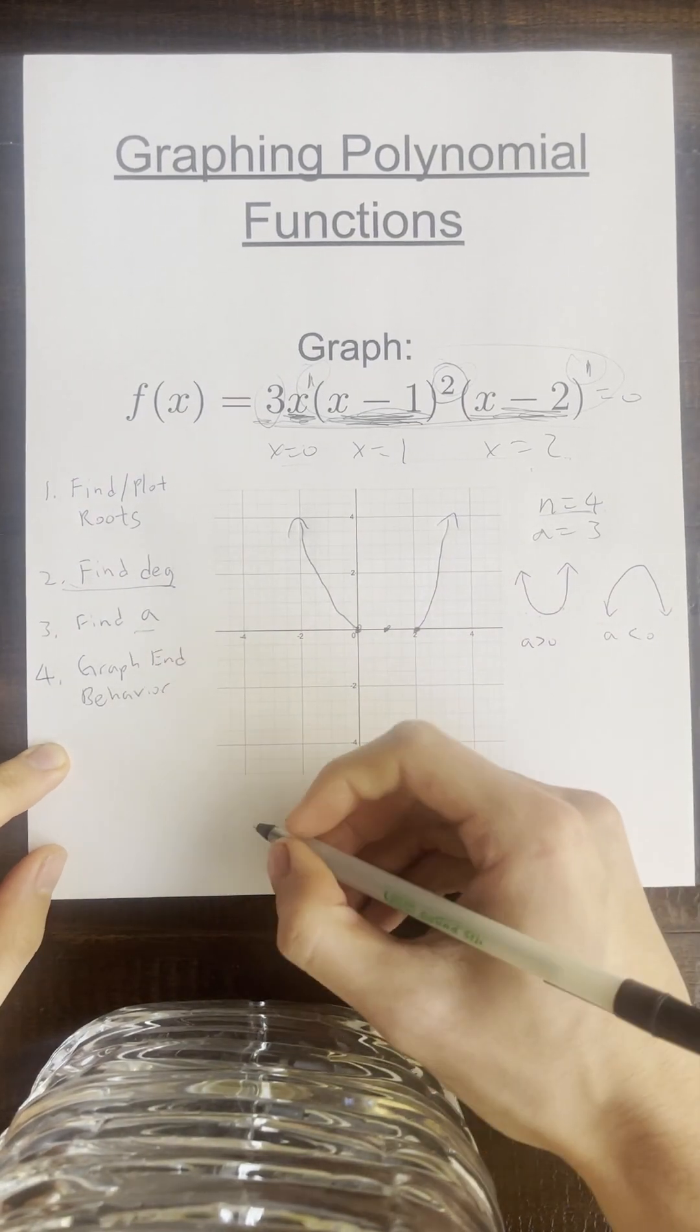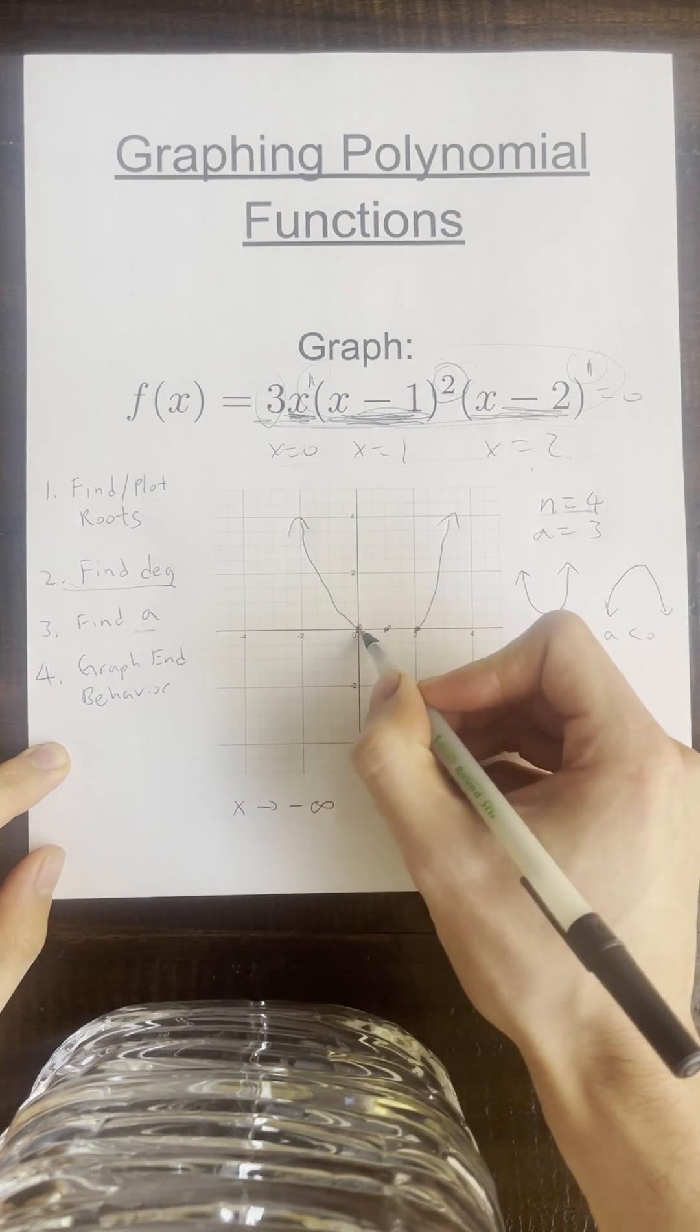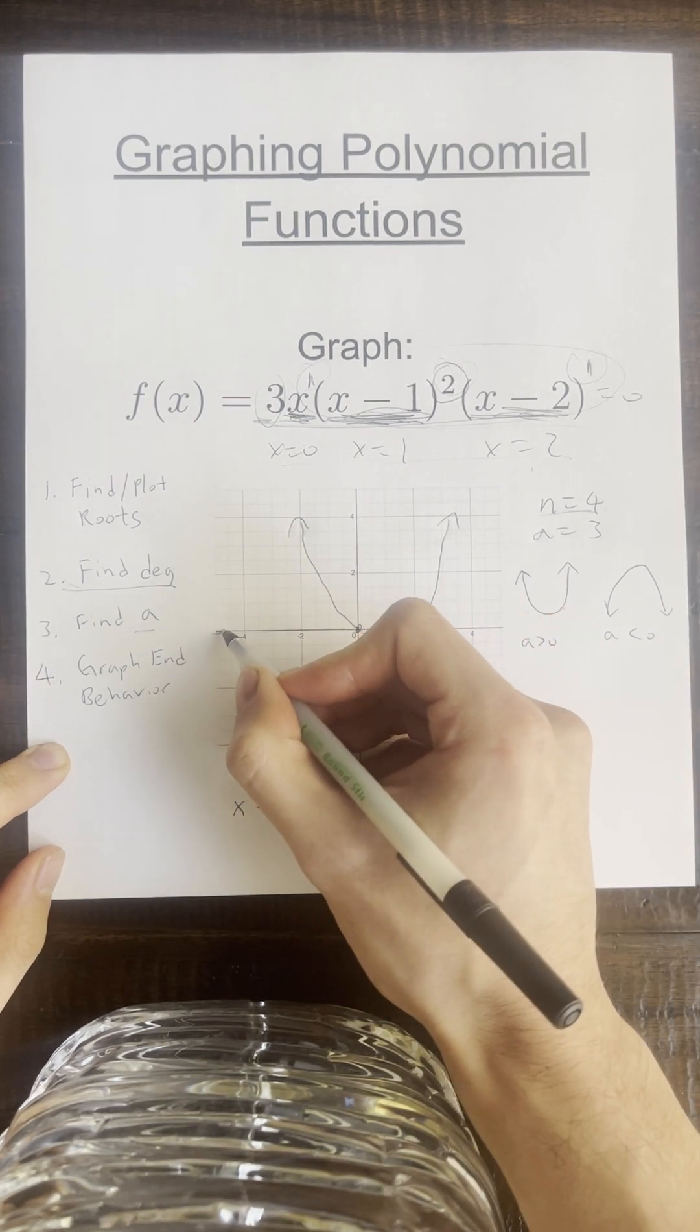Let's go ahead and write out the end behavior. So as x approaches negative infinity, so that means as we go this way on x, what happens to y?